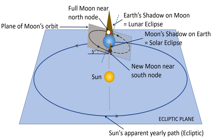There would be an eclipse of the Moon at every Full Moon, and approximately two weeks later at a New Moon there would be an eclipse of the Sun — a total of at least 24 eclipses every year. But as we all know, that does not happen, and there are two main reasons for that.